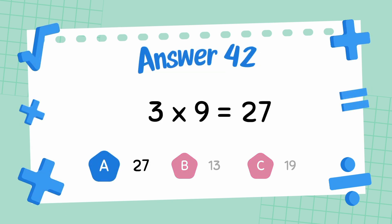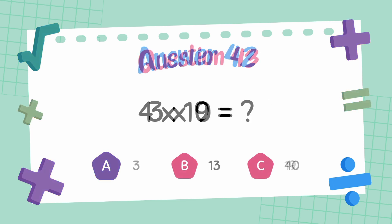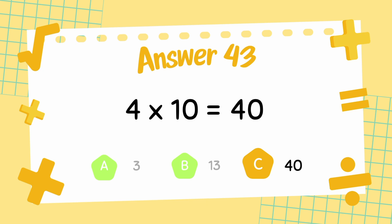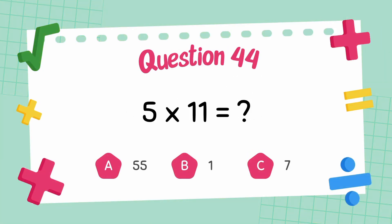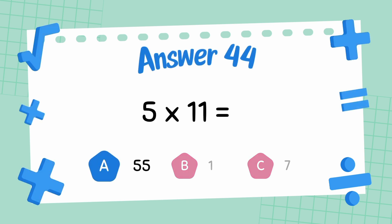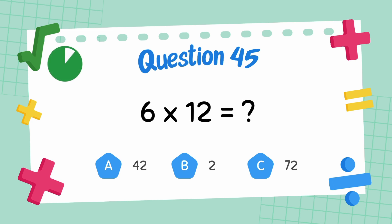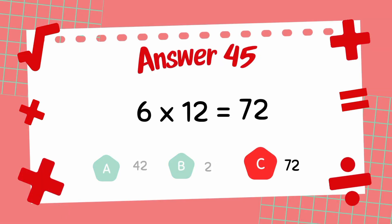The answer is 27. What is 4 multiply 10? The answer is 40. What is 5 multiply 11? The answer is 55. What is 6 multiply 12? The answer is 72.